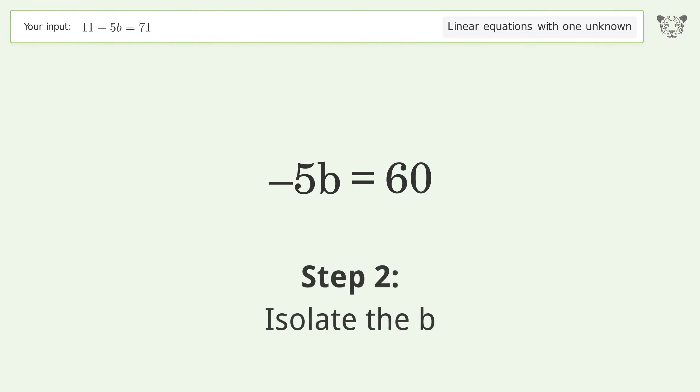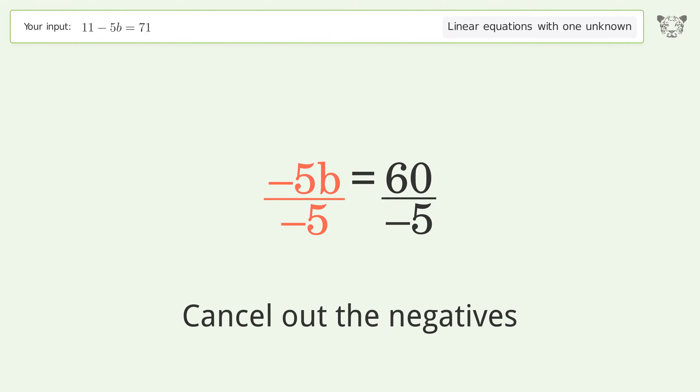Isolate the b. Divide both sides by negative 5. Cancel out the negatives.